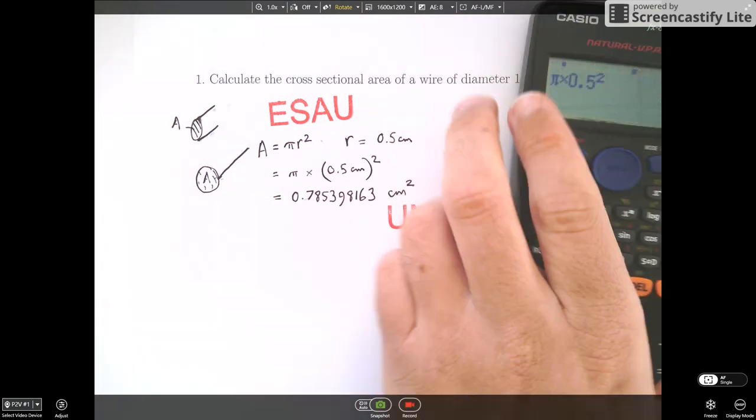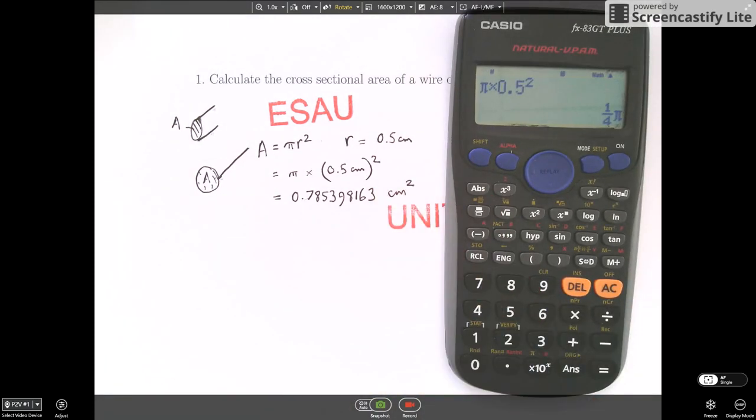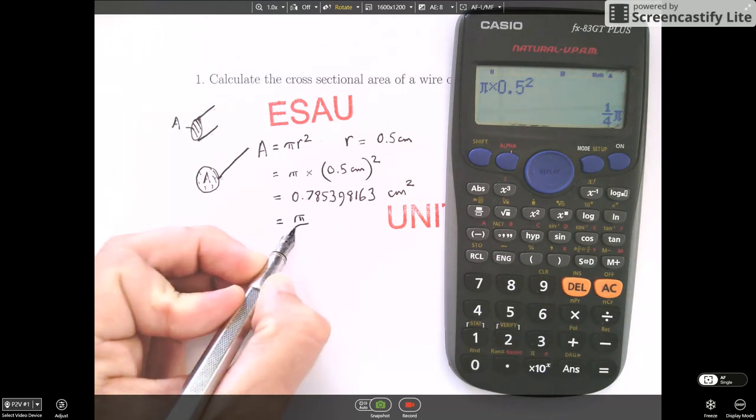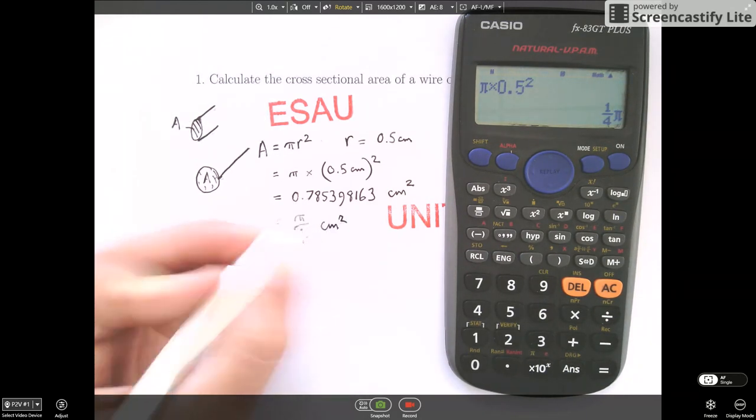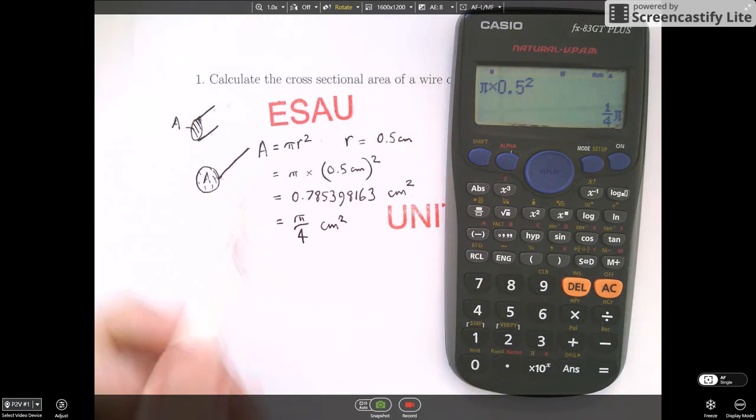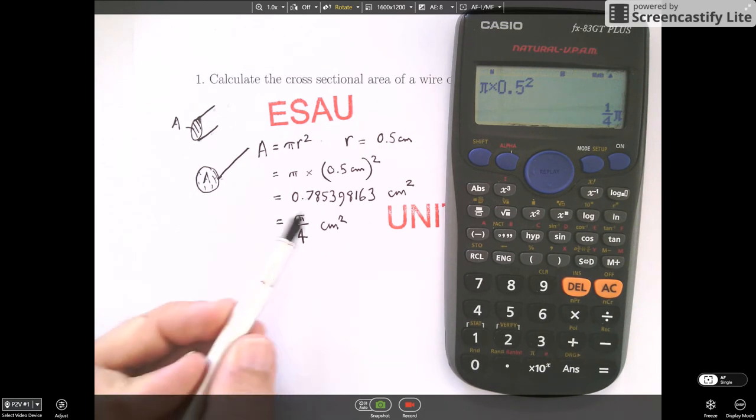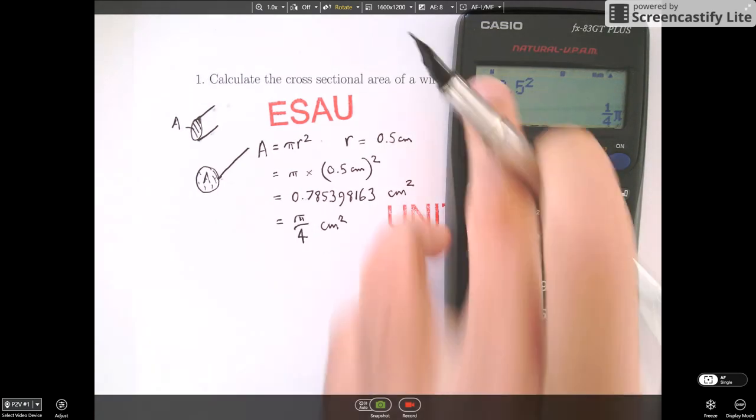So some students might now write the answer down as pi by 4 cm squared. This is even worse than the previous example, because at least in the previous example, we were only showing that we knew it to three, six, nine significant figures, so one part in a billion. In this case, we're actually claiming that we know it to infinite accuracy, which is even worse.